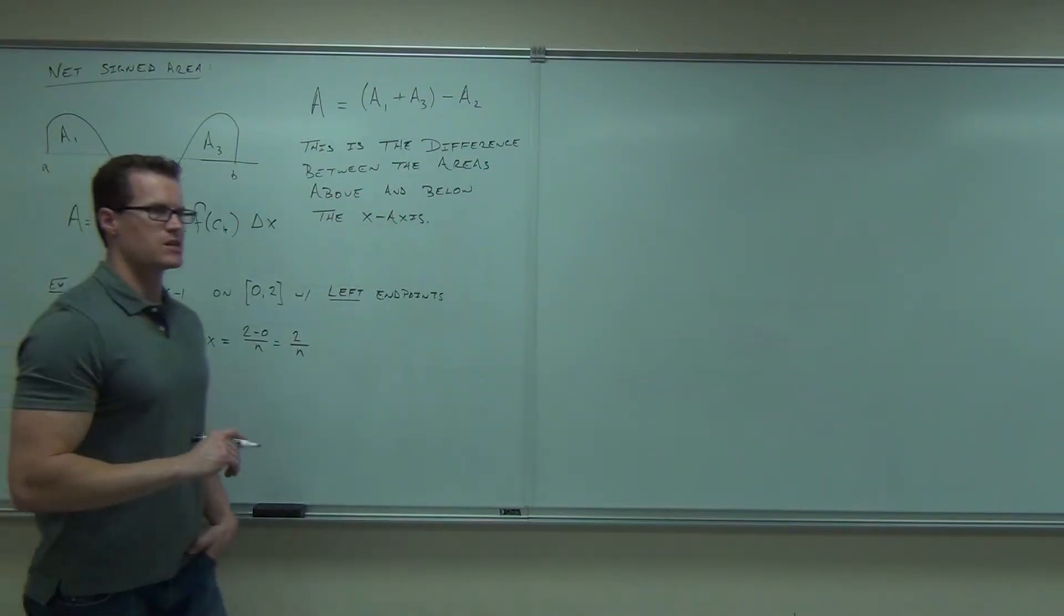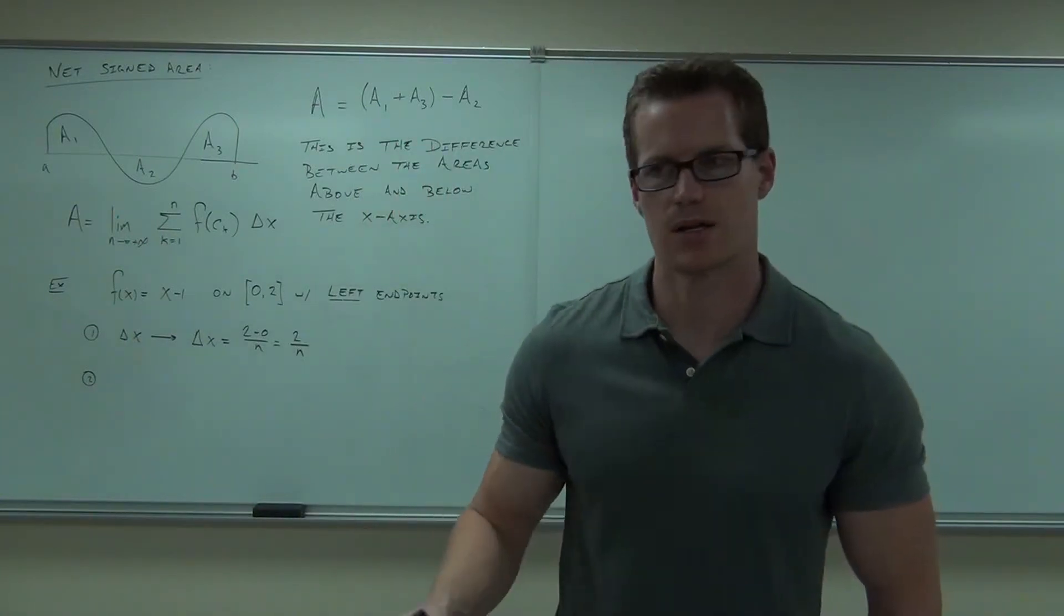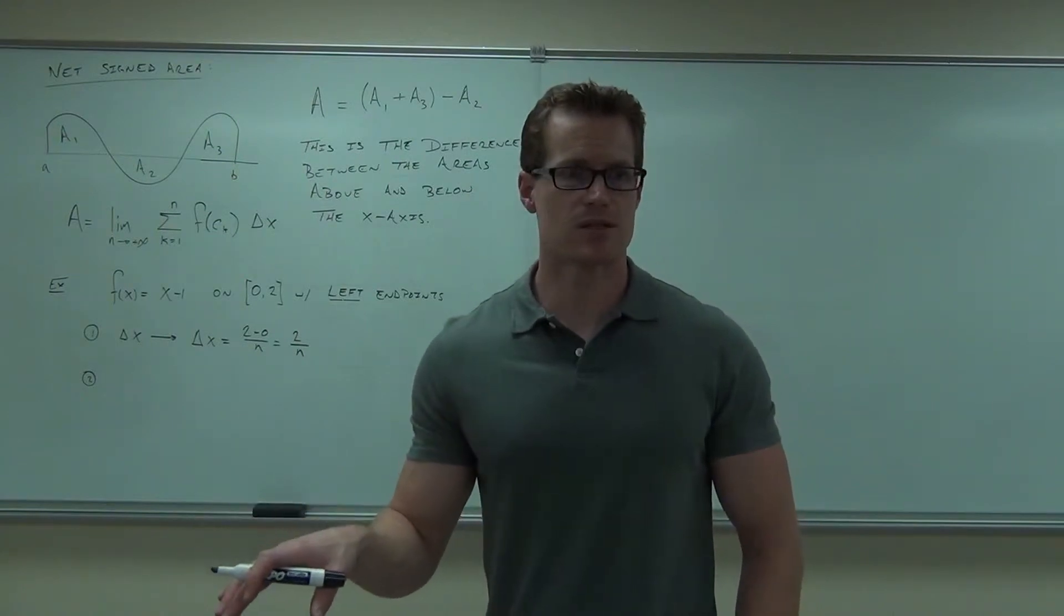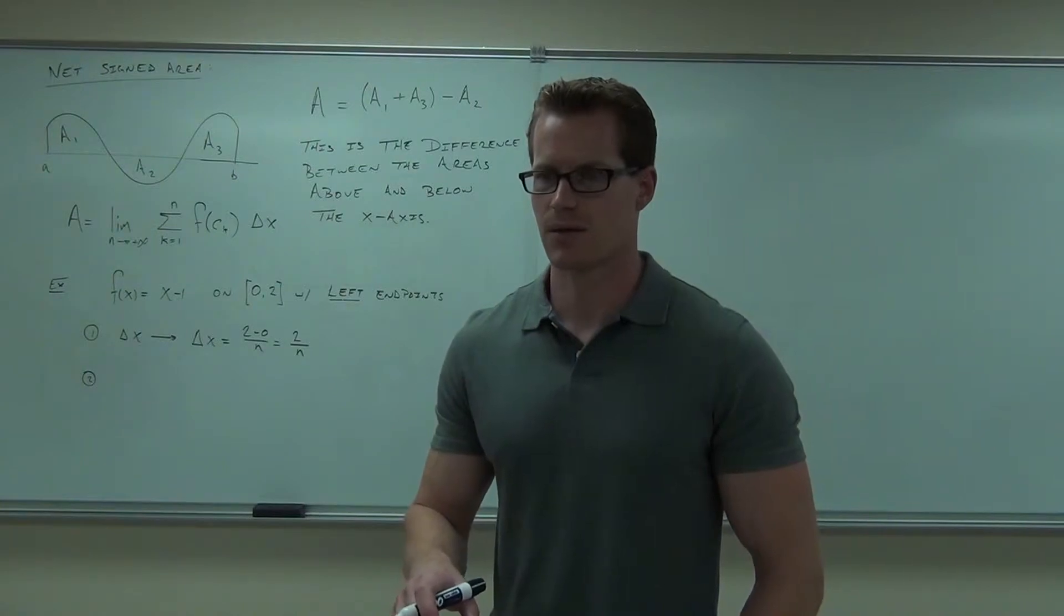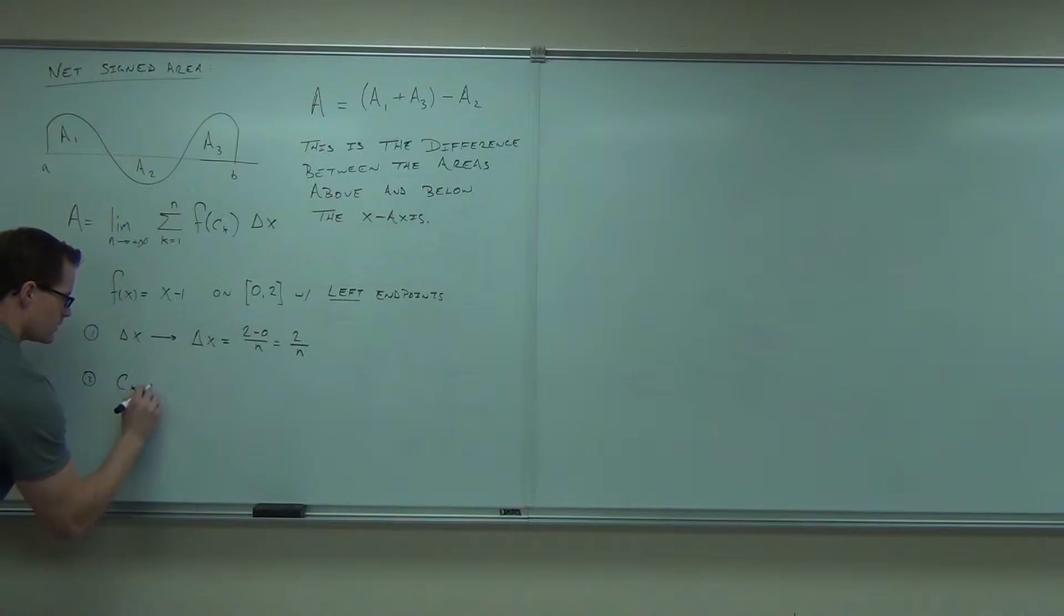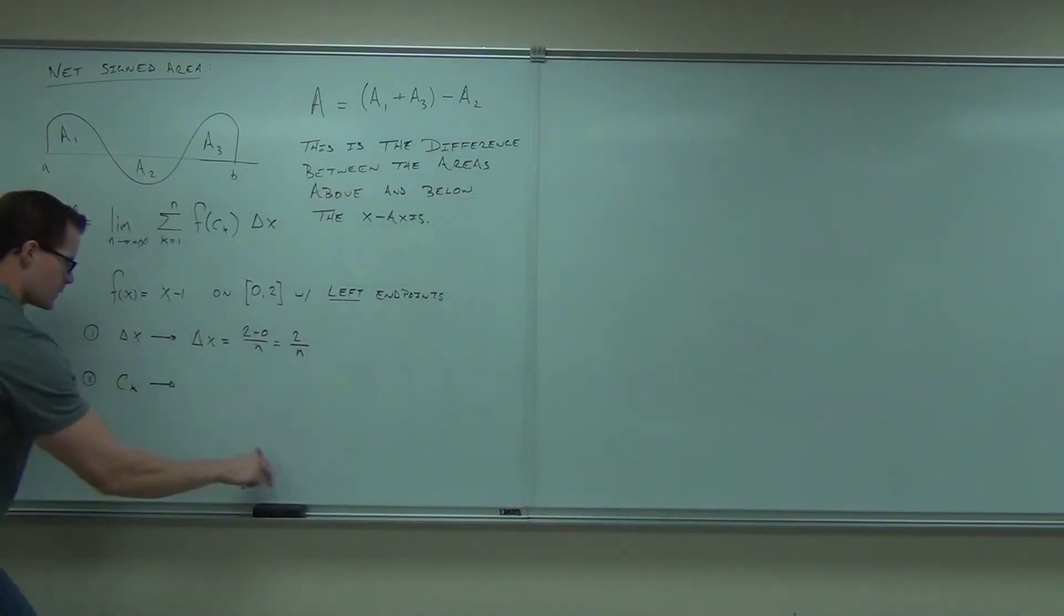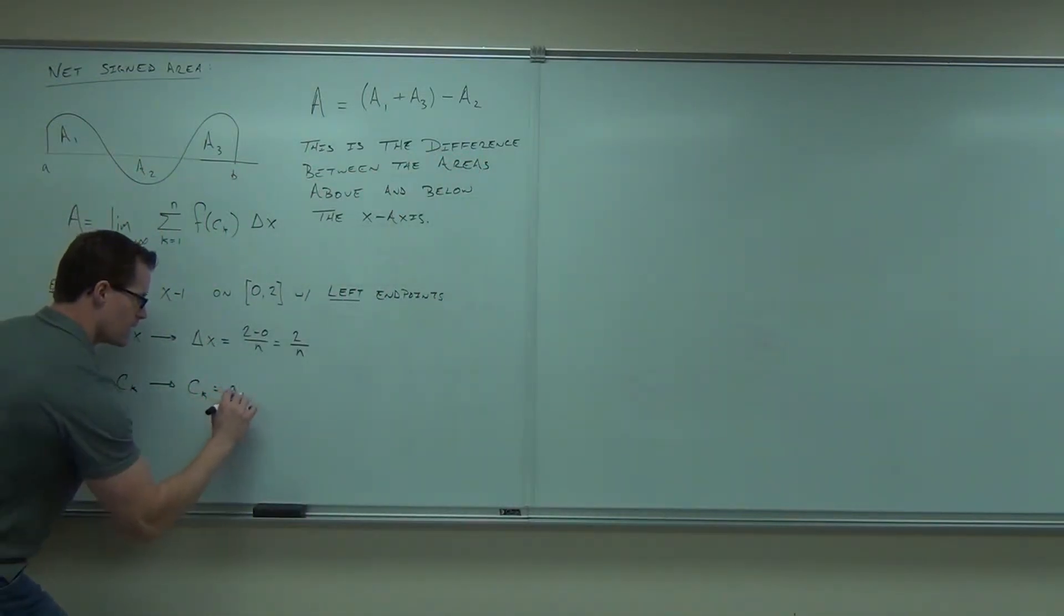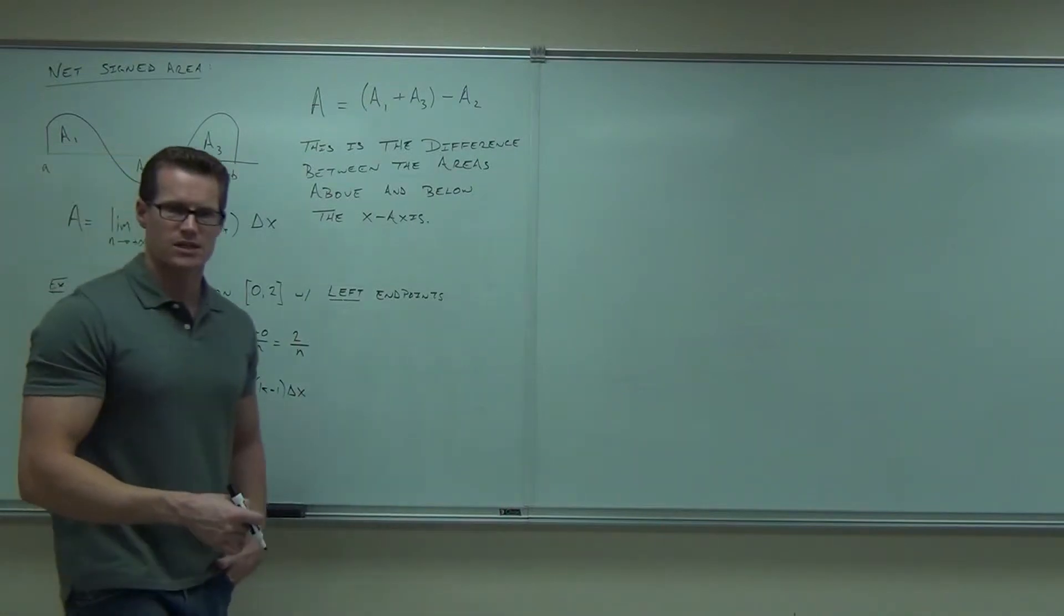The next step is you've got to find c sub k or x_k dot. Whatever notation you prefer. I don't care how you do it. I've called it x_k dot in the previous lessons. The book will call it c sub k. Would you like to use c sub k so you kind of see that? Okay, I'll use c sub k if you like. So the next is find c sub k. Using left endpoints, c sub k says this: a plus (k minus 1) delta x. That's what c sub k would say for you.